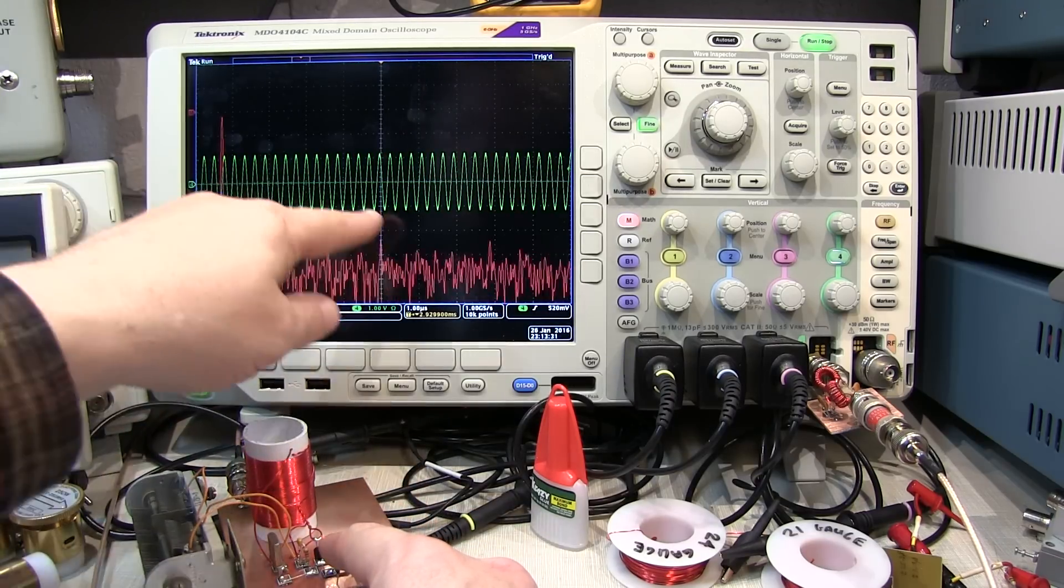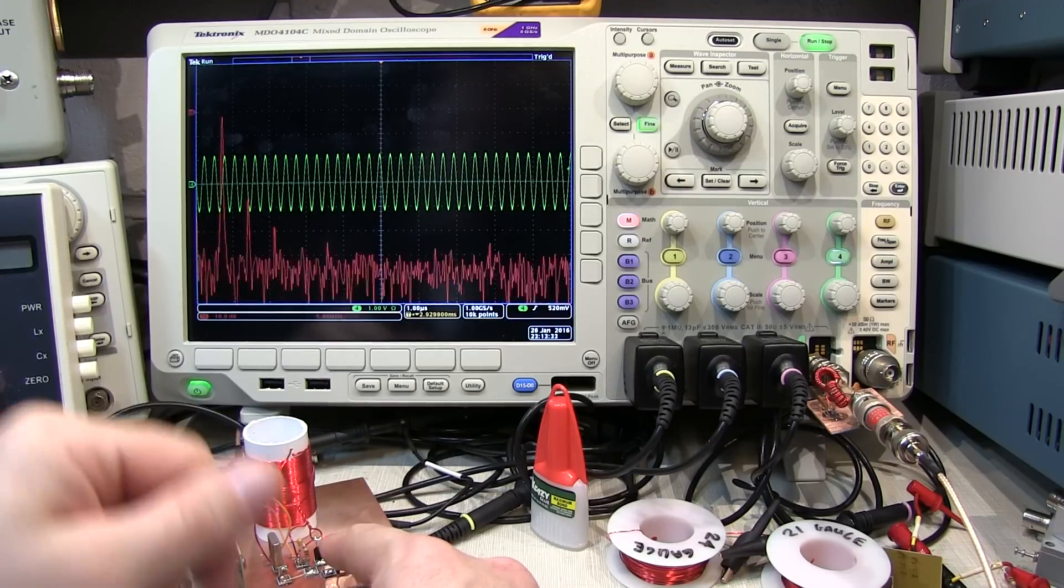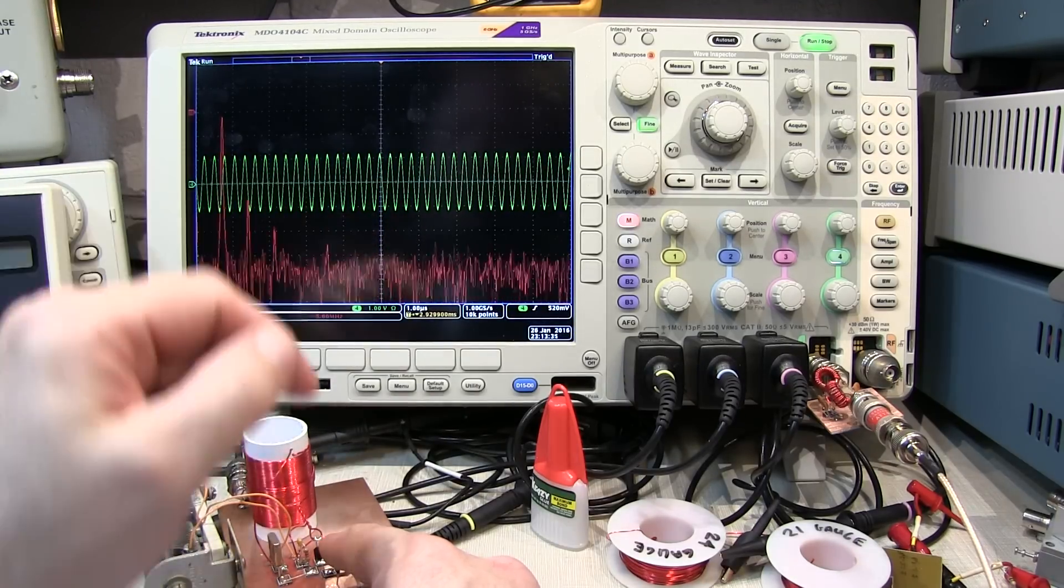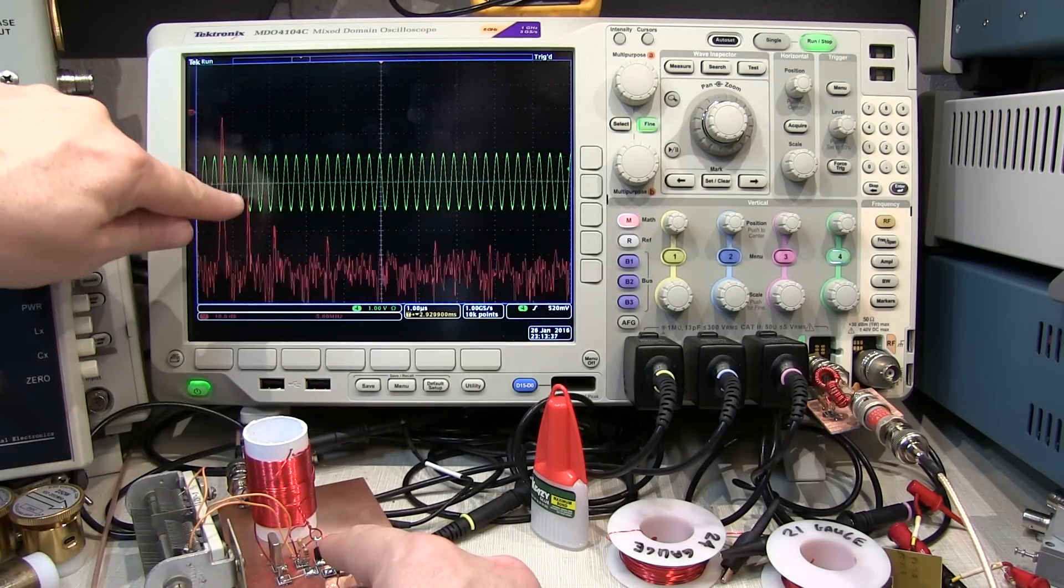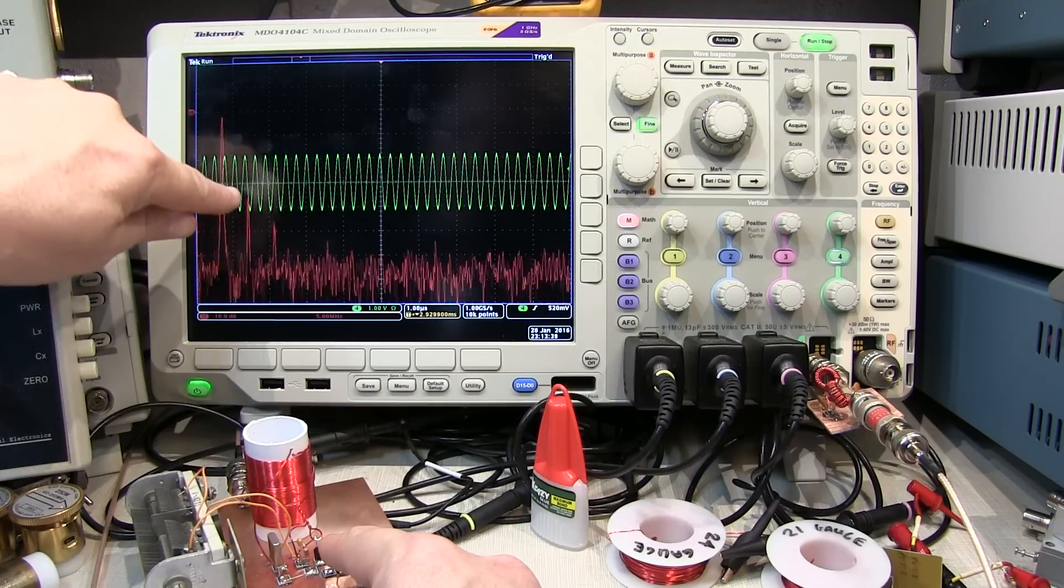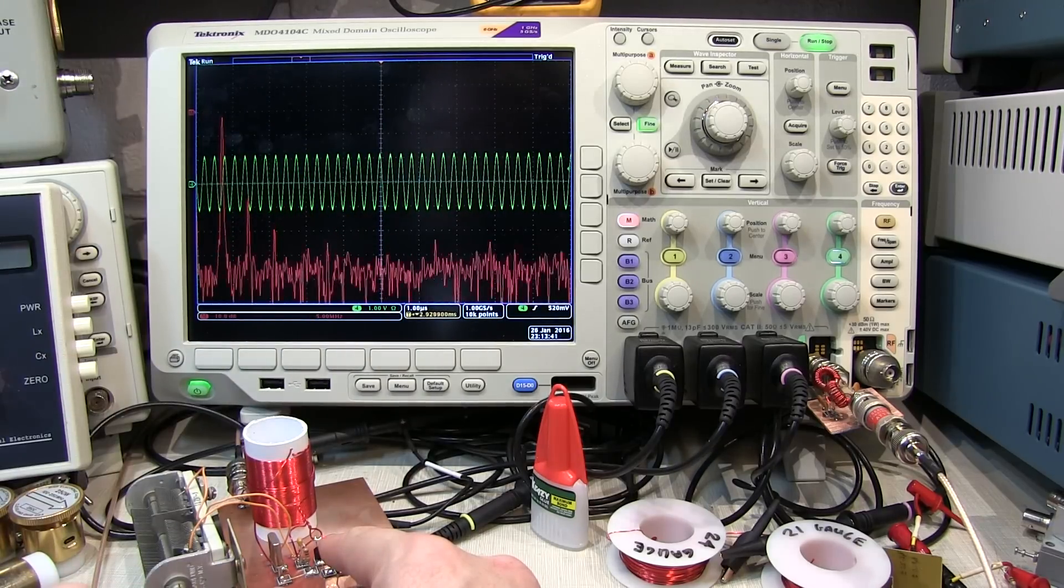I made a small adjustment to the time base here to get better resolution of the FFT, and we can see the FFT result here. And again, we can see that the second harmonic is about that 35 dB down, just like the spectrum analyzer showed.